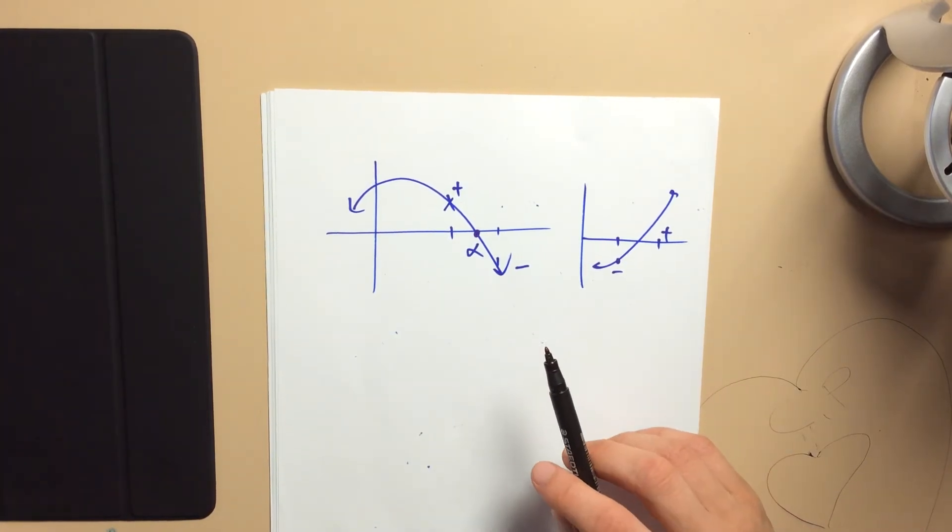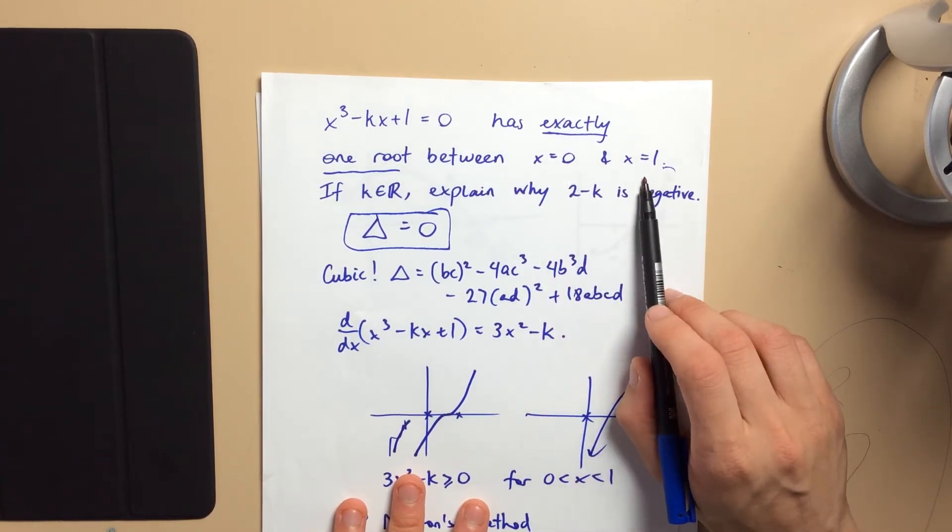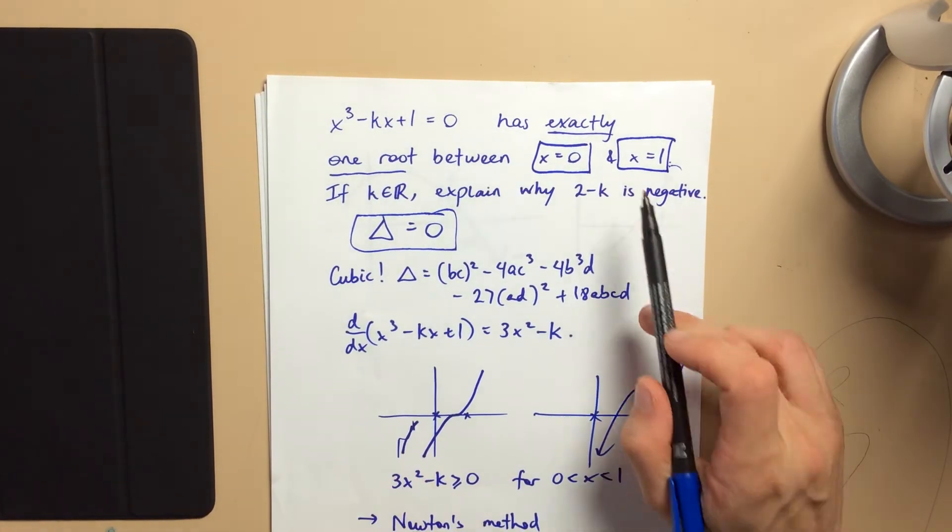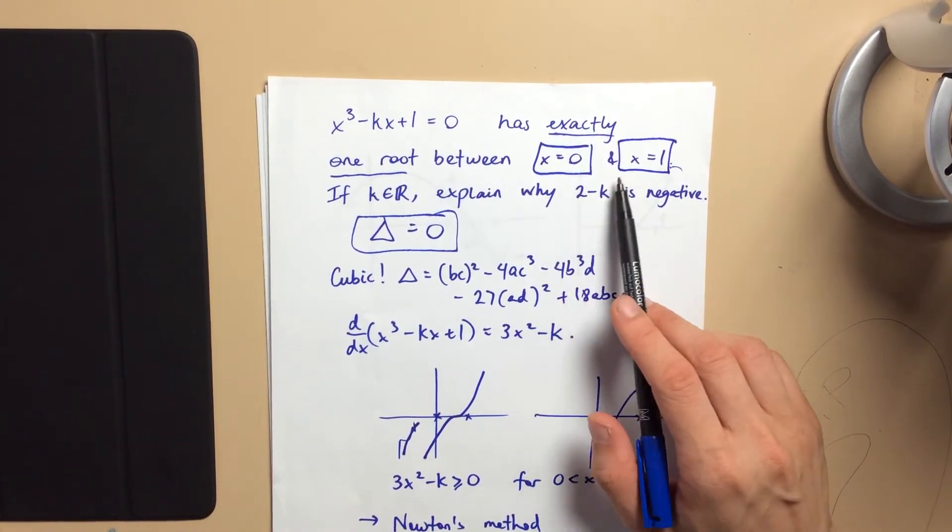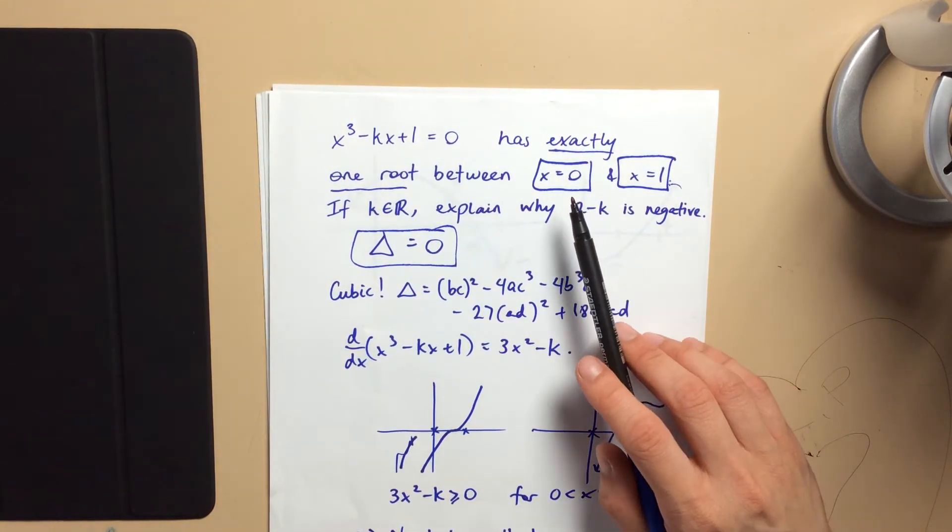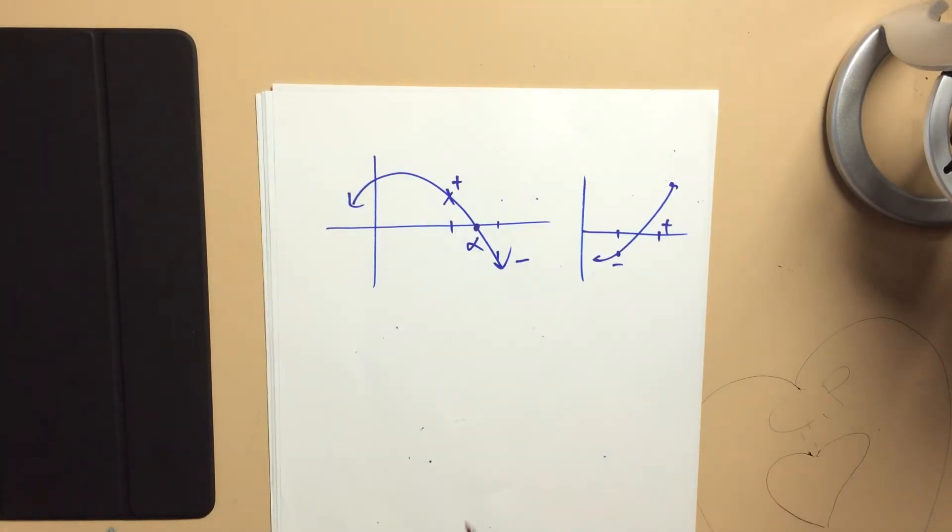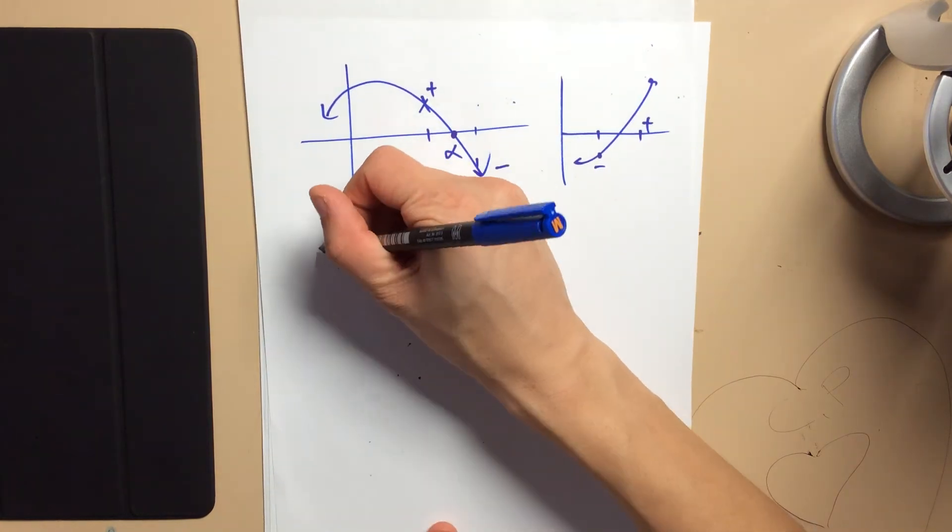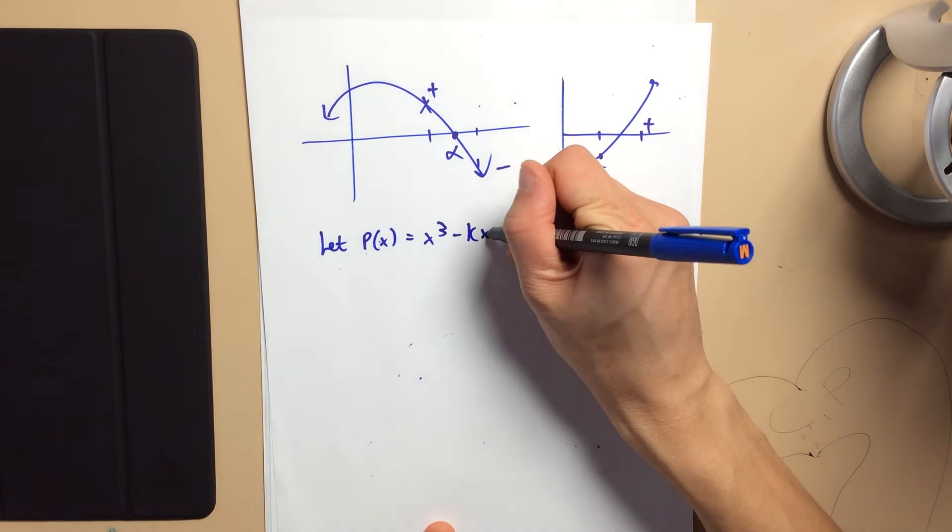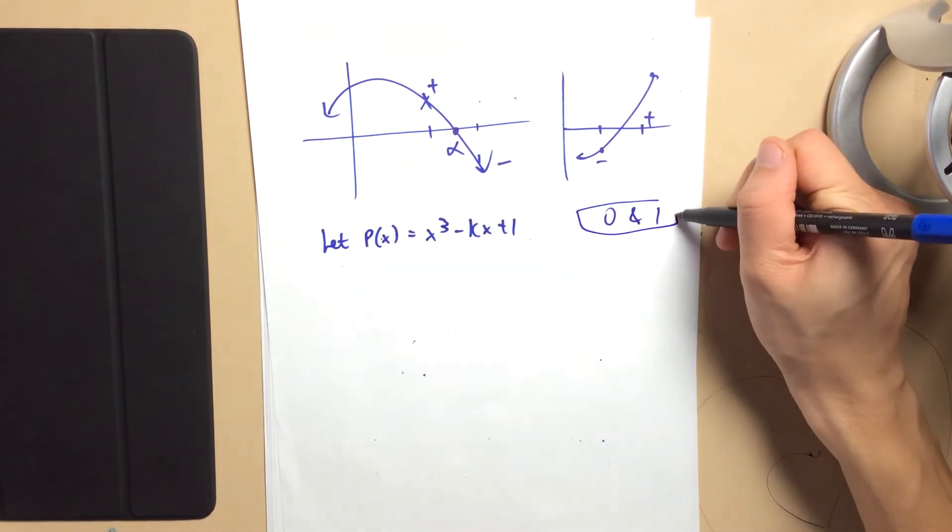So therefore, since I know the question told me that the root is between x equals 0 and x equals 1, that should have been my clue to say, all right, I can use this, I can take advantage of these two facts here, or one fact with two parts to it, to work out a relationship between the roots and this k thing in this positive negative business. So let's pedal back a little bit. Let's give this polynomial a name, let's call it p. It's x cubed minus kx plus 1. And I know that there's a root between 0 and 1.